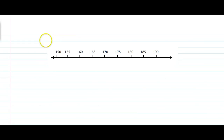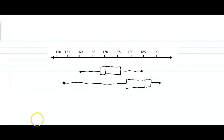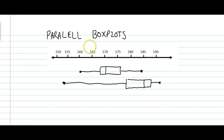Another way of comparing data is to use parallel box plots. Here's an example of two parallel box plots. Parallel just means two things side by side. So here are our two box plots side by side, each representing a distinct data set.